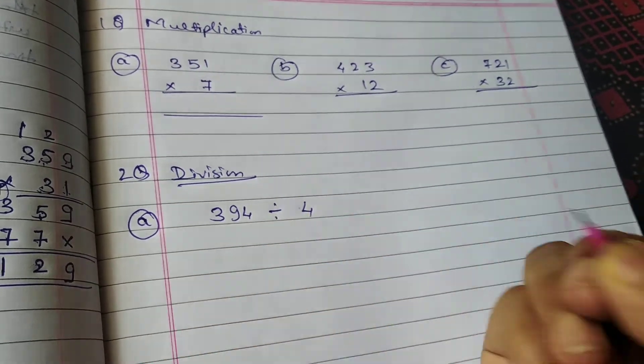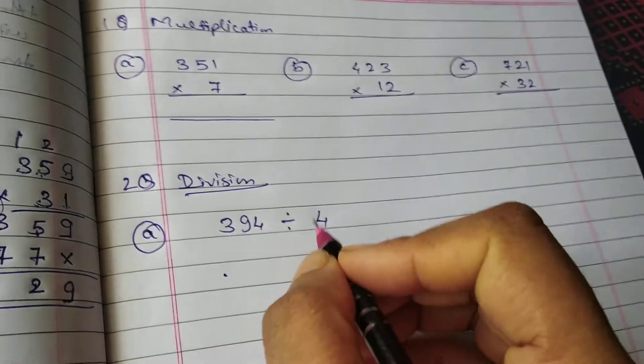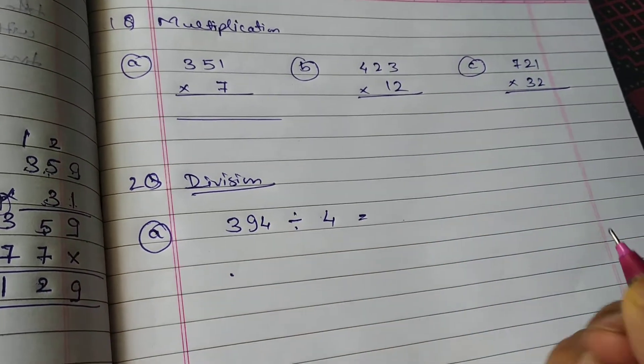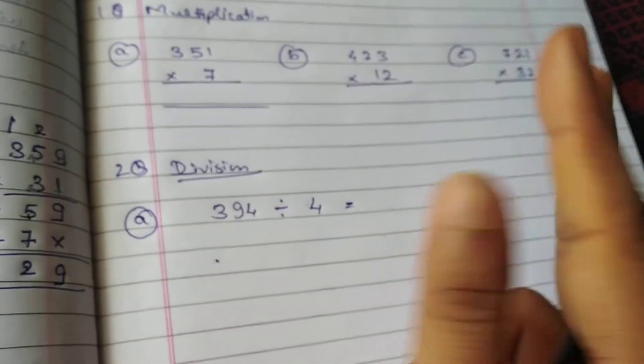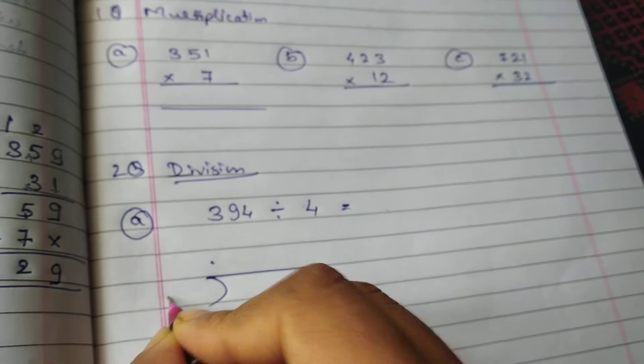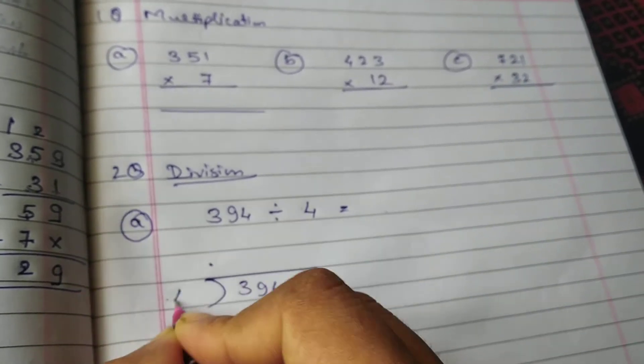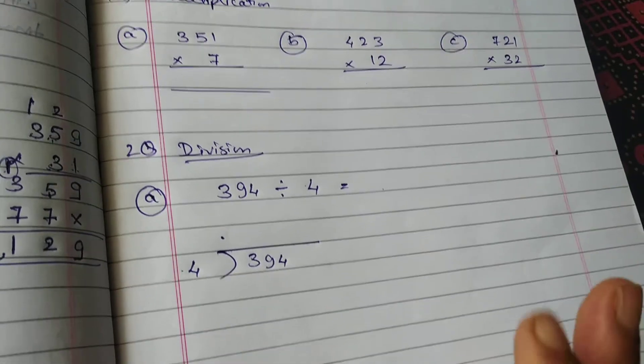Okay, this is number. Abhi isme hum answer jo likhte hai, wo remainder hota hai ya quotient, both we have to find it out. Now so this is our divisor. Okay, so this is our divisor. Okay, so this is dividend 394 is our dividend, this is your divisor. Now we have to find out remainder and quotient.